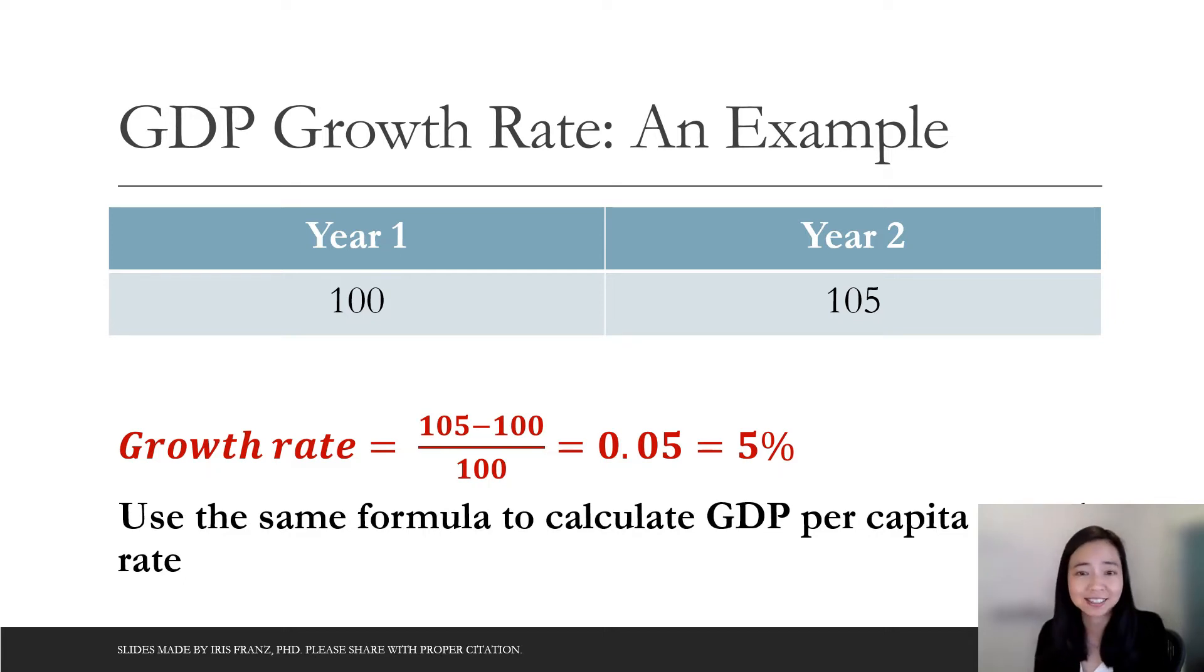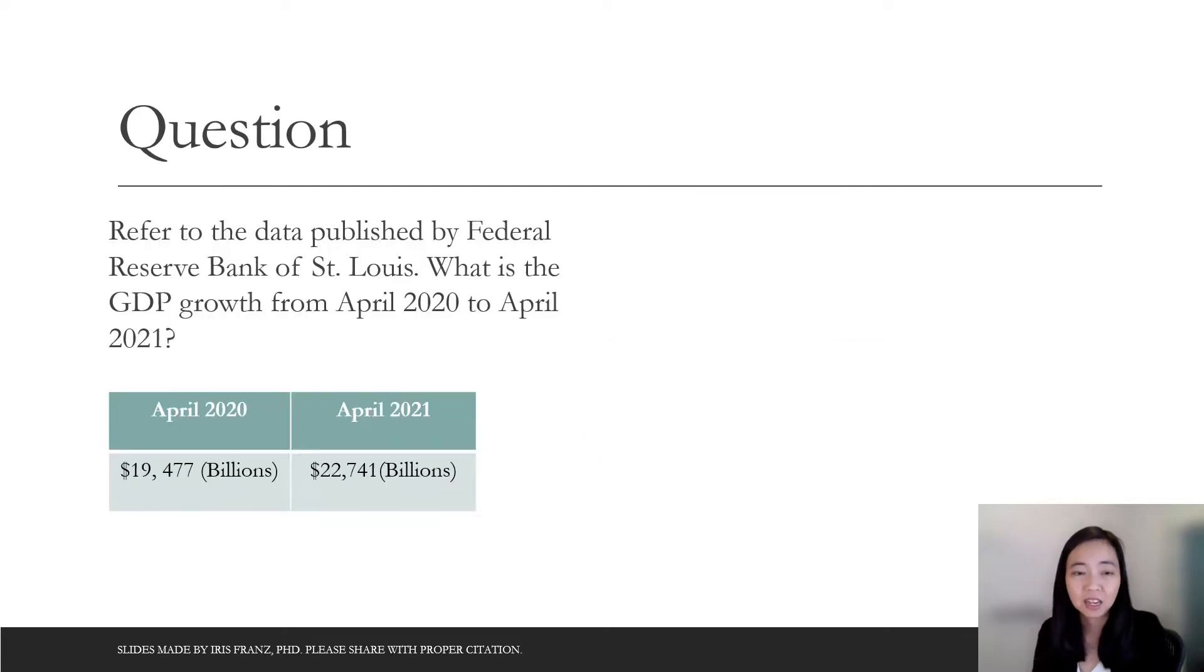And we're going to use exactly the same formula if you're calculating say the growth rate of GDP per capita, you use exactly the same formula. So let's look at the question. So suppose this is a data of Federal Reserve Bank of St. Louis. I actually got a data from there. And here is a GDP growth from April 2020 to April 2021.